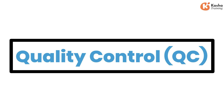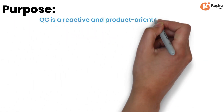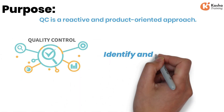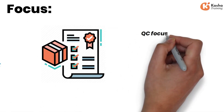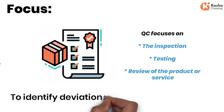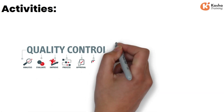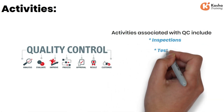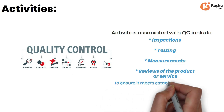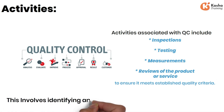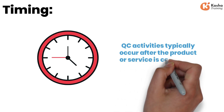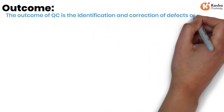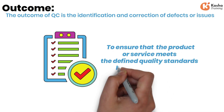Quality Control, QC — Purpose: QC is a reactive and product-oriented approach. Its primary purpose is to identify and rectify defects and errors in the final product or service before it is delivered to the customer. Focus: QC focuses on the inspection, testing, and review of the product or service to identify deviations from quality standards. Activities: activities associated with QC include inspections, testing, measurements, and reviews of the product or service to ensure it meets established quality criteria, involving identifying and addressing any defects or issues found. Timing: QC activities typically occur after the product or service is completed but before it is delivered to the customer. Outcome: the outcome of QC is the identification and correction of defects or issues to ensure that the product or service meets the defined quality standards before it reaches the customer.